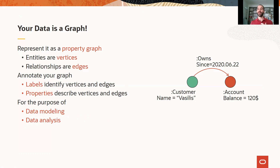In order to have more data on your graph, you can also annotate the vertices and the edges with labels that are essentially types for your vertices and edges. So in the example, we have the green vertex being a customer and the red one is an account, and we have an edge connecting these two with the label 'owns'. Additionally, you can add key-value properties on both vertices and edges to represent even more data. So in the example, we have the customer having the name Vasilis and the ownership edge has a creation date property called 'since'.